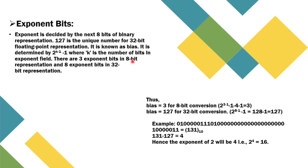There are 3 exponent bits in 8-bit representation and 8 exponent bits in 32-bit representation. Thus, bias equals 3 for 8-bit conversion and bias equals 127 for 32-bit conversion. In this example, the exponent bits translate to 131 in decimal. 131 minus 127 (the bias) equals 4, so the exponent of 2 is 4, that is 2 to the power 4, which gives us 16.